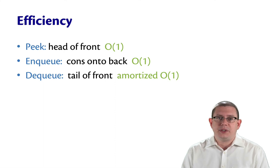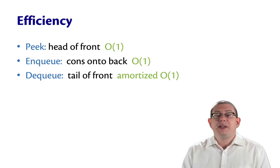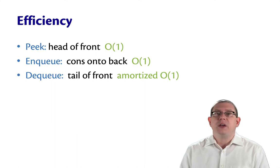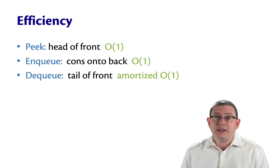So the efficiency then under this analysis, peek and enqueue, those stay constant time. But dequeue is amortized constant time. It's true. It's still worst case linear.